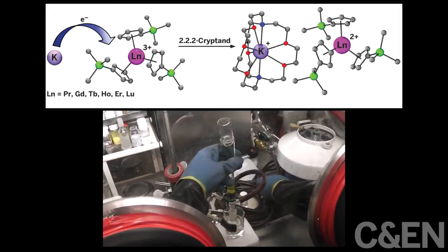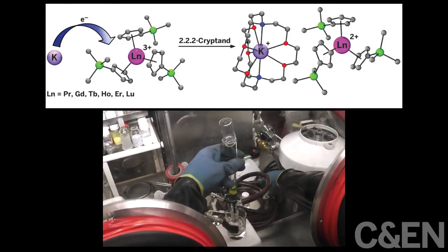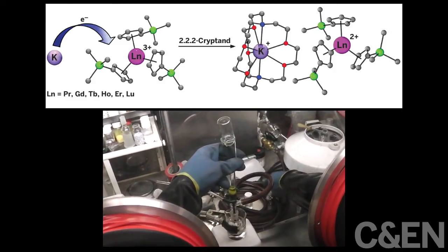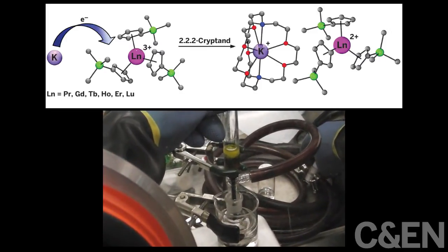Switching to a 2-2-2 cryptan ligand, McDonald can do the synthesis at room temperature for those elements plus praseodymium, gadolinium, and lutetium, all lanthanides that researchers thought couldn't be made as plus 2 complexes.